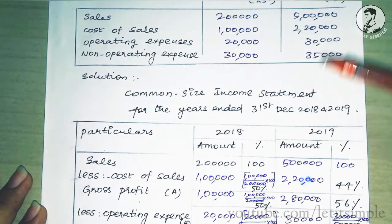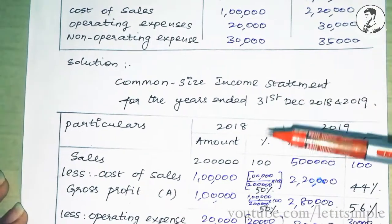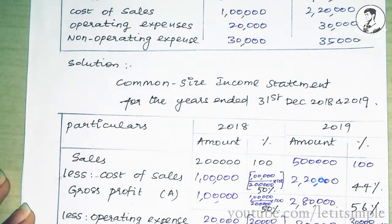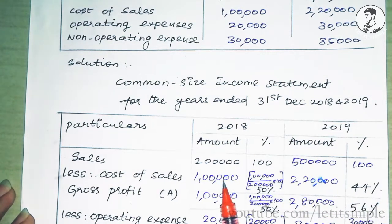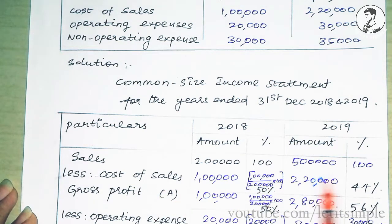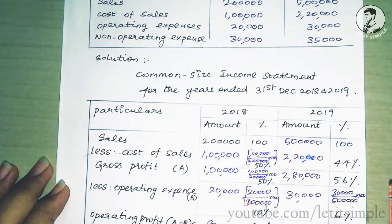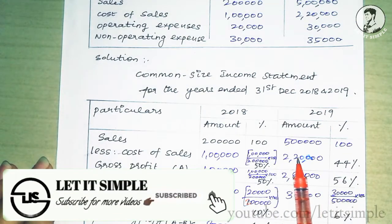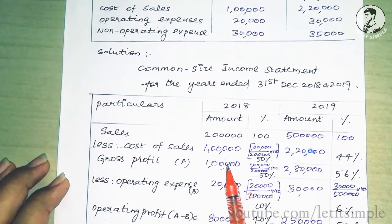Sales is 2 lakhs, 5 lakhs. We will copy the data. What do we do first? We will assume that sales is 100%. So 2 lakhs is 100%. This is a sales base. In the common-size income statement, we assume sales is 100%. Next, cost of sales is 2 lakhs 20. We calculate: 2 lakhs 20 divided by 5 lakhs into 100 equals 44%.